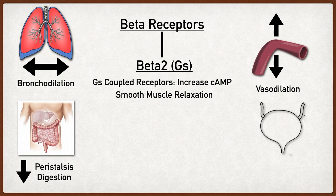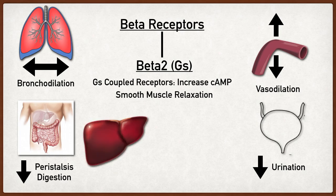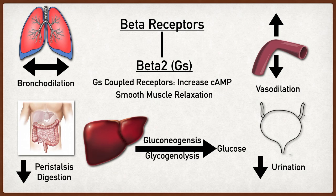Another example is the bladder. During a fight-or-flight response, urination isn't important for immediate survival. Beta 2 receptors are located on the wall of the bladder, and when activated they relax the smooth muscles of the bladder, leading to decreased urination. Beta 2 receptors are also located in the liver. During fight-or-flight we increase metabolism and need more energy, so activation leads to gluconeogenesis and breakdown of glycogen into glucose. There are also beta 2 adrenergic receptors in the pancreas; when activated they increase insulin release so we can use that glucose.